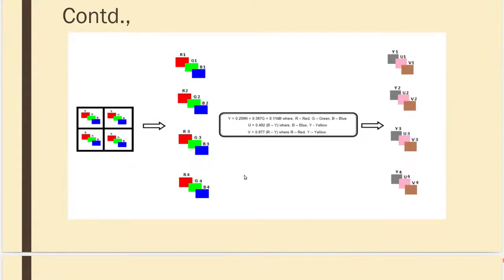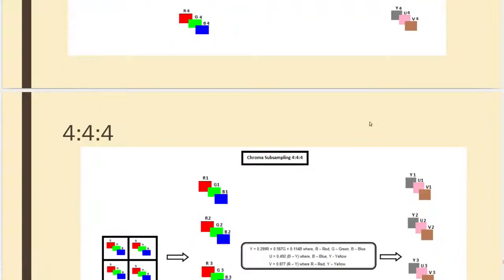So how does it work? I have a 2×2 matrix with RGB components. I apply the formula and I get YUV, YUV, YUV for all corresponding RGB values. This is the fundamental structure.